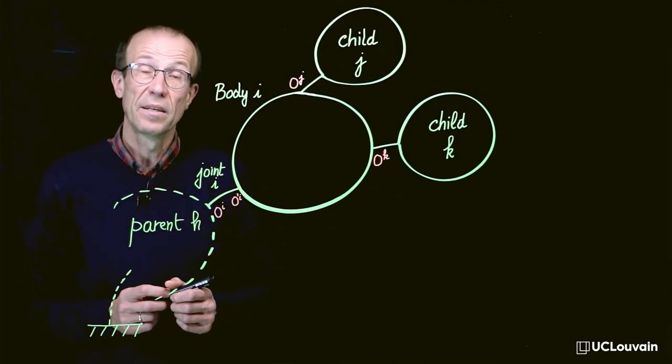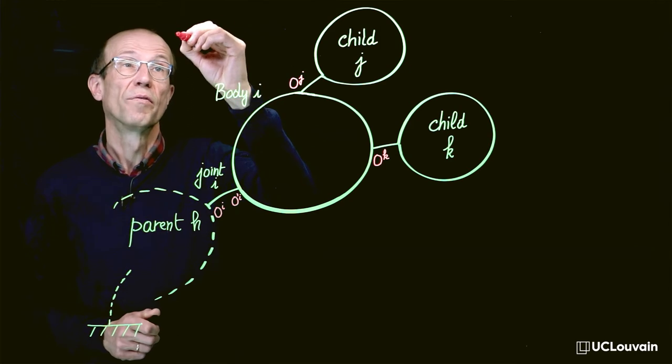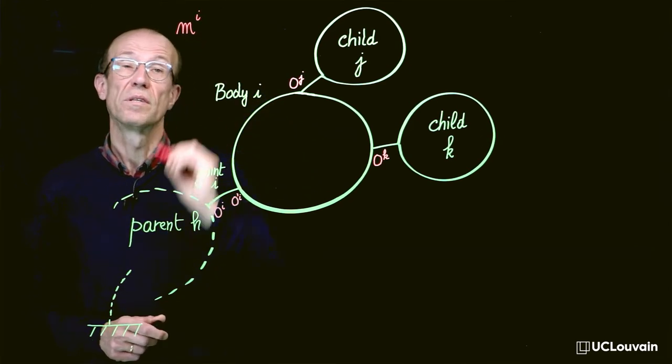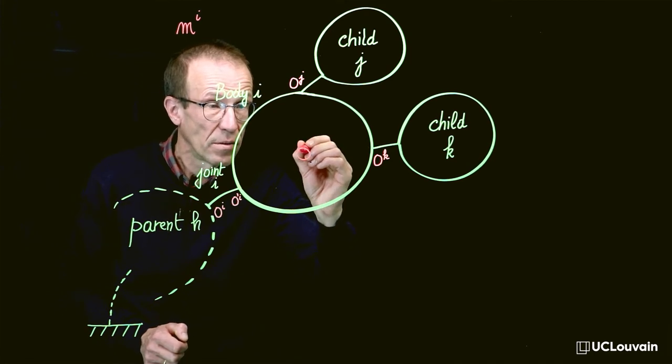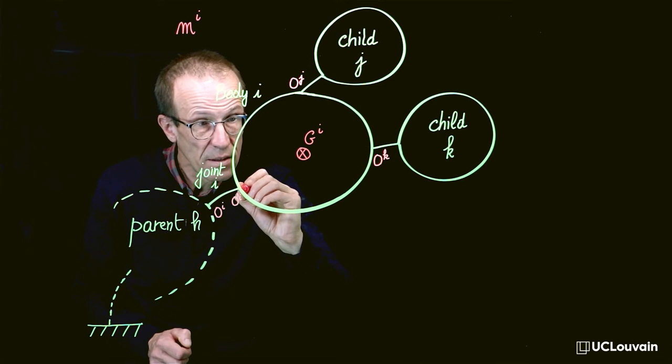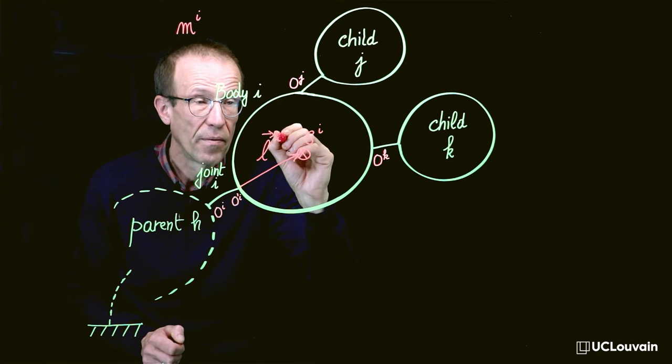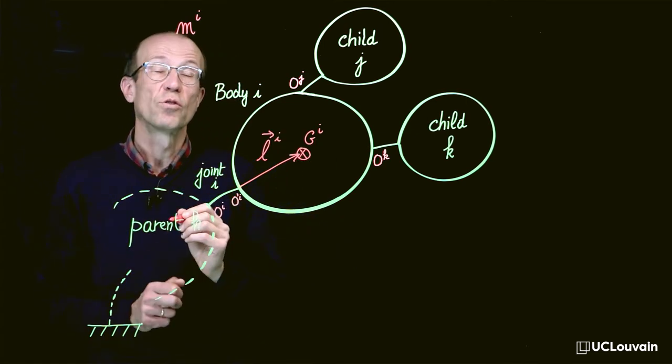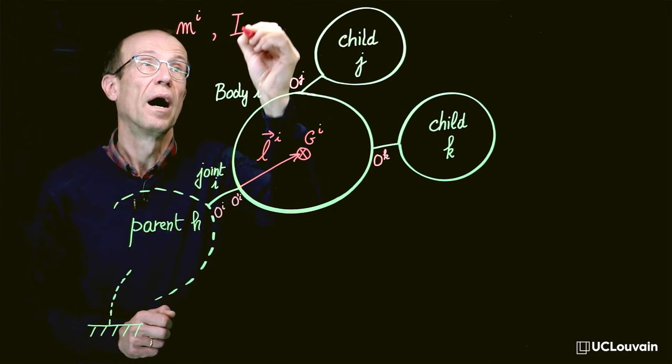The dynamic data associated to body I are the mass denoted MI, the center of mass denoted DI and located via a vector called LI, and also the inertia tensor I.